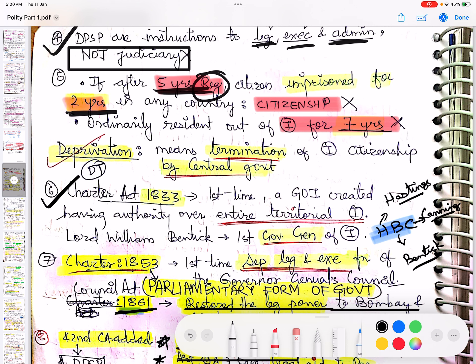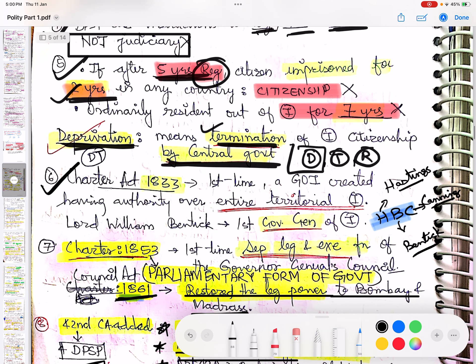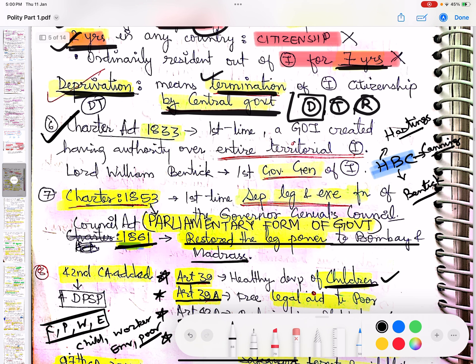What do you mean by deprivation? Deprivation means the termination of Indian citizenship by the central government. There are 4-5 ways through which you could be deprived of your citizenship. Your government will terminate if you have registration citizenship. After 5 years, if you're imprisoned for 2 years, then you're gone. Similarly, if outside you are gone for 7 years without registration as an ordinary resident there, then citizenship is terminated.